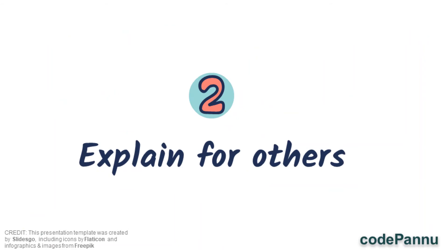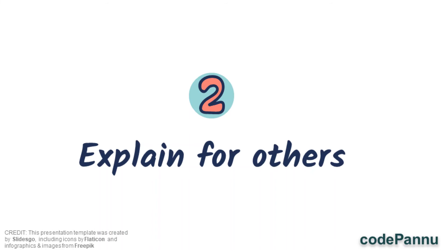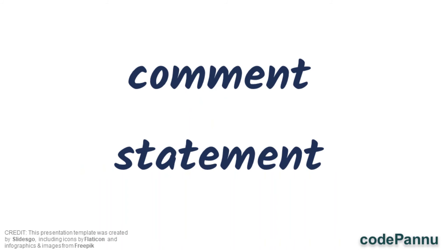The second reason is that in the programming world, within the same team, each programmer will write different sections for the same project. Then all the sections will be combined to create a full working code. So programmers will write comments that explain their code, and this will help other programmers to understand it. Comment statements are written for the people who are reading the code — they are not instructions for Python.